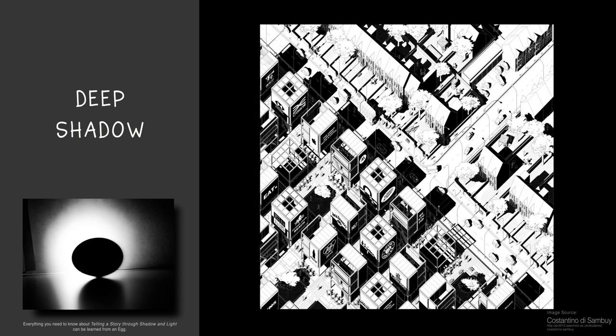In this drawing called Battle of the Generic from the AA in London, only deep shadow and stark white are used. By using this graphic effect, the shadows of the buildings become more visually powerful than the architecture that casts them.